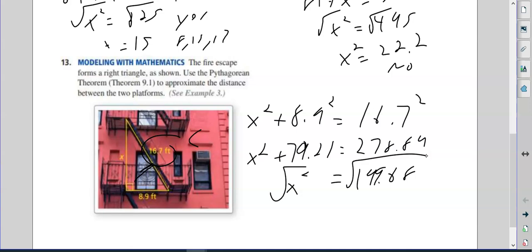And then when I square root both sides, I'm going to get 14.13 feet, or 14.1.